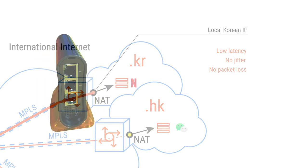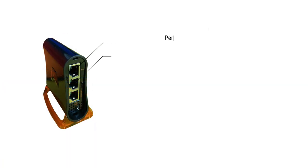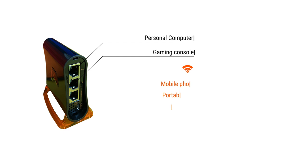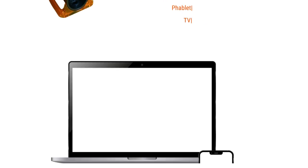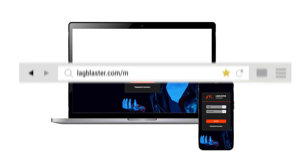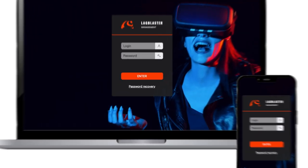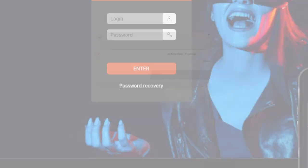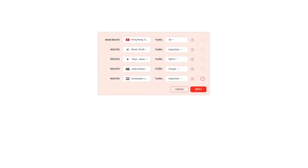Lag Blaster allows you to use two cables and up to five Wi-Fi connections simultaneously. No app installation needed — set up connections via our website portal and fine-tune your connection with Lag Blaster to meet your exact needs.